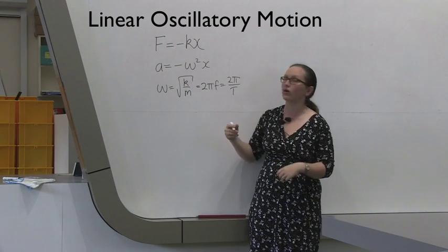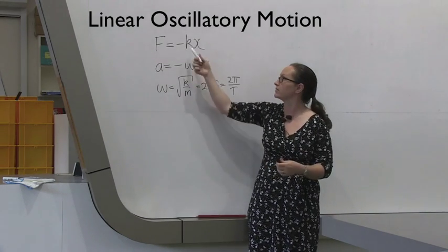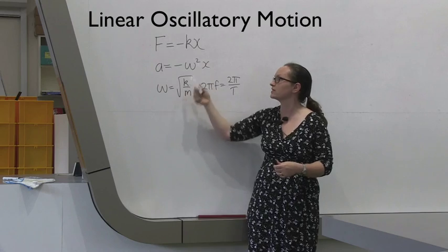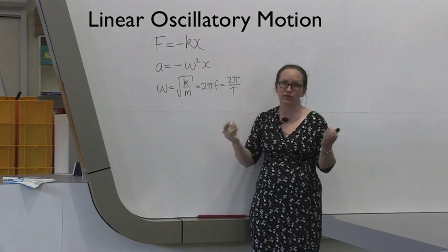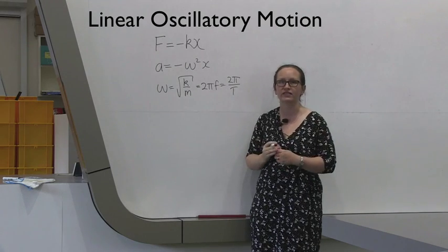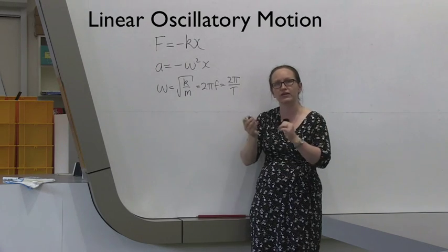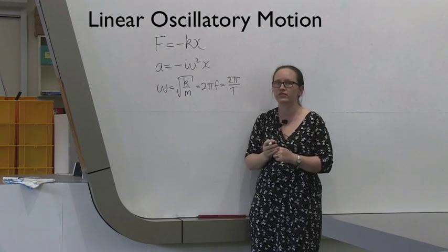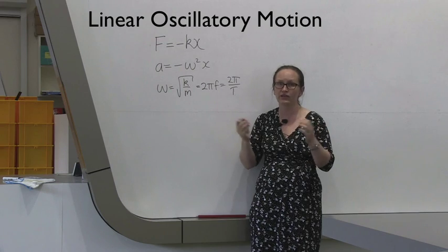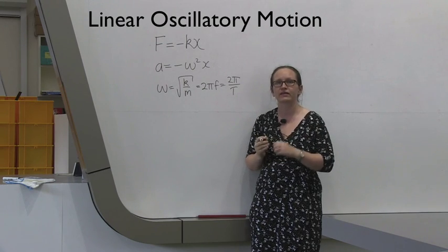Once you've got k with these two methods, both including uncertainties, you're going to compare your two results, and hopefully they will be in agreement.